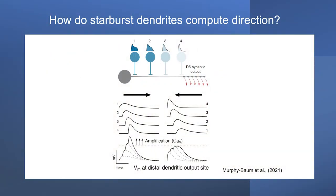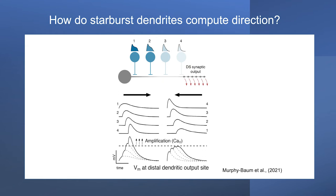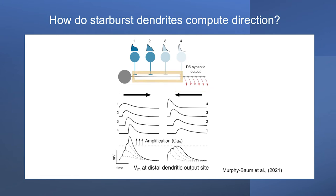To actually verify that one bipolar cell class is sustained and another is transient is quite difficult, because when you measure activity from the soma you only see the average activity across the dendrite. When measuring calcium activity in the dendrite, the calcium influx is limited to the output sites, so you don't see activity along the dendrite itself. Monitoring and verifying the kinetics of these bipolar cell inputs has been a huge challenge, and this whole hypothesis remained untested.